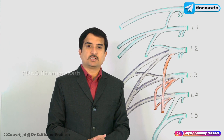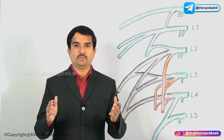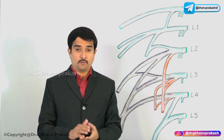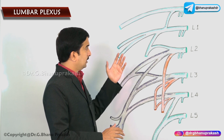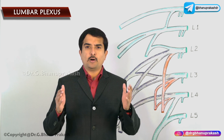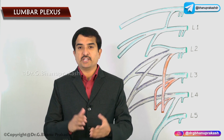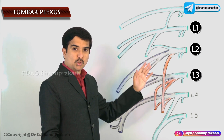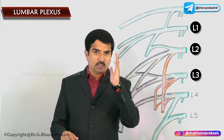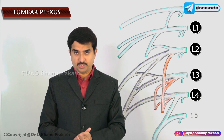We are going to discuss one of the very important topics of the gross anatomy of the lower limb, which is the lumbar plexus. As you can see in this picture, the lumbar plexus is formed within the psoas major muscle by the union of the ventral ramus of L1 to L3 and also the larger upper part of the ventral ramus of L4 nerve.